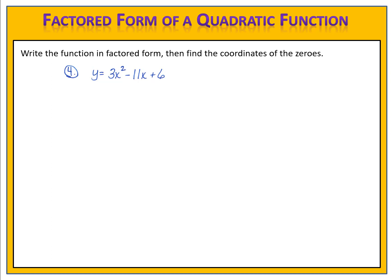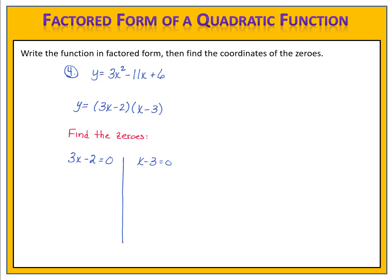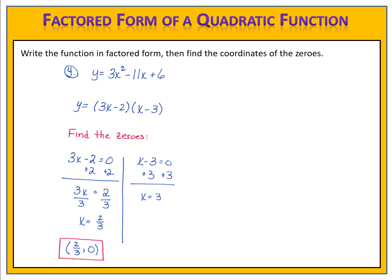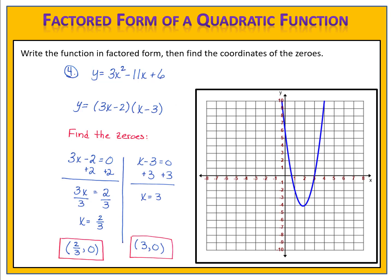Let's see how you did. We begin by factoring. The trinomial factors to 3x minus 2 times x minus 3, so here is the function in factored form. We use the factored form to find the zeros by writing each factor equal to zero and solving the two equations. We get x equals 2 thirds and x equals 3. Those give us zeros at 2 thirds comma 0 and 3 comma 0 — the two points where the parabola passes through the x-axis.